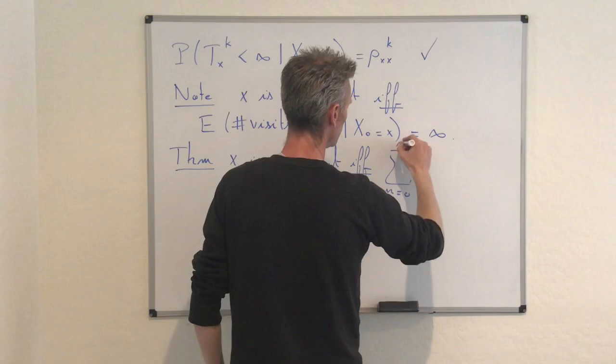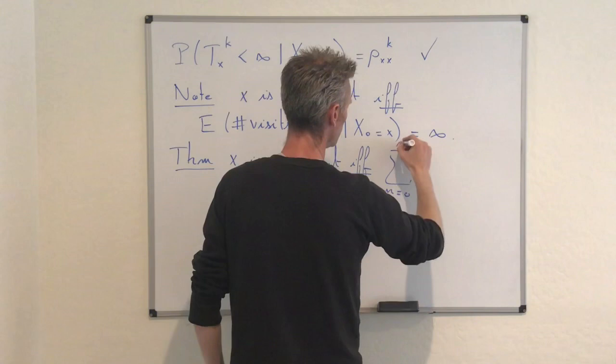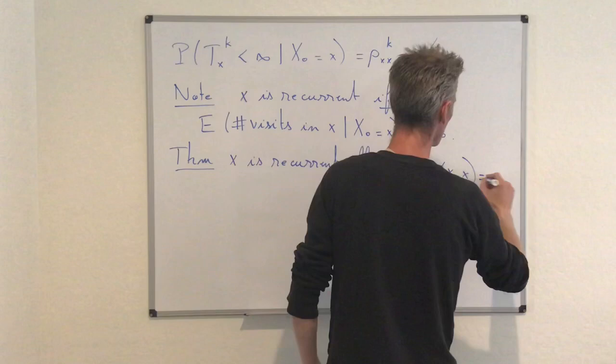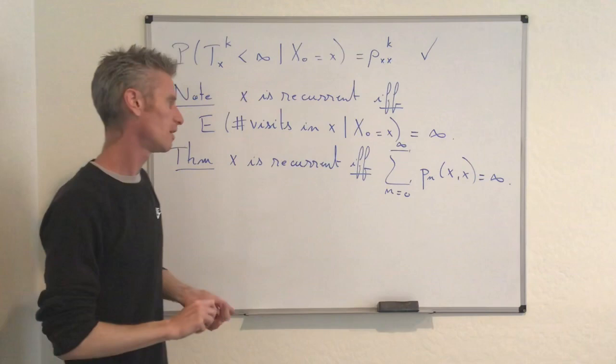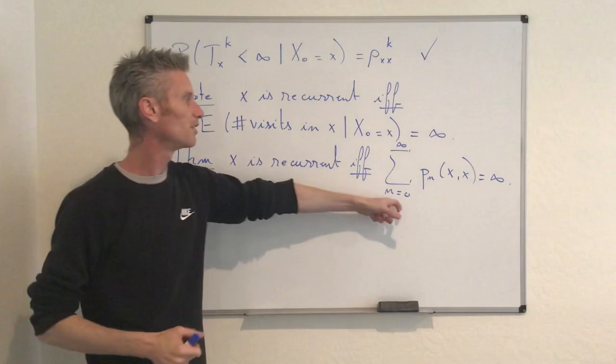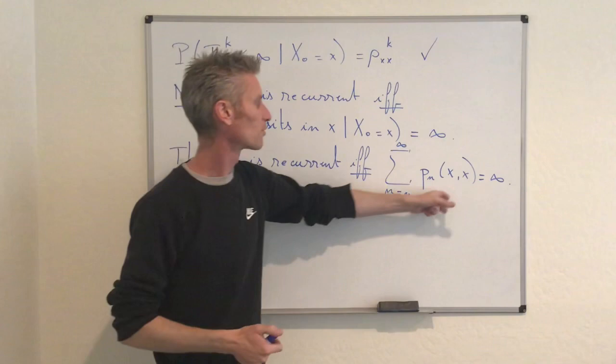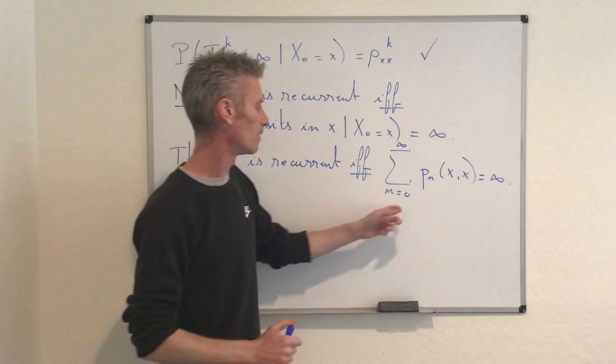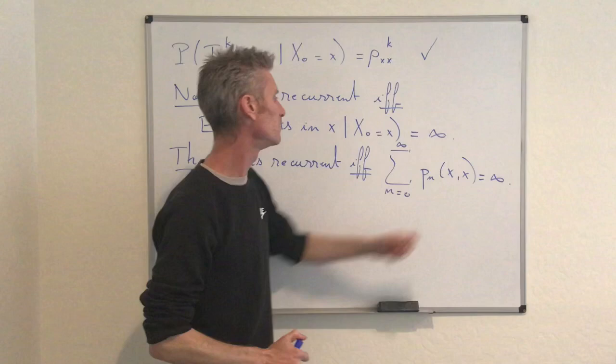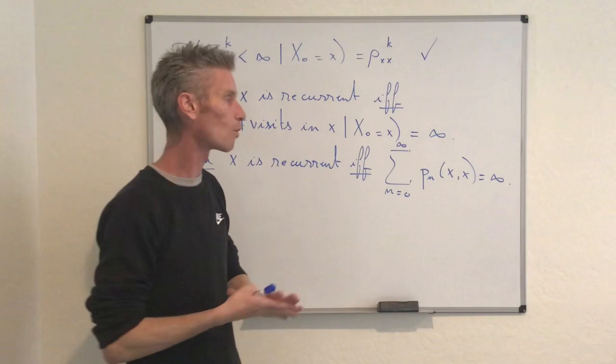Now I'll give a relationship between recurrence/transience and the n-step transition probabilities. The theorem states: X is recurrent if and only if the infinite sum Σ_{n=0}^∞ P^n(X,X) equals infinity. This is useful in practice, especially when the state space is infinite. We'll apply this theorem in upcoming videos to check whether one-dimensional, two-dimensional, or higher-dimensional symmetric random walks are recurrent or transient.